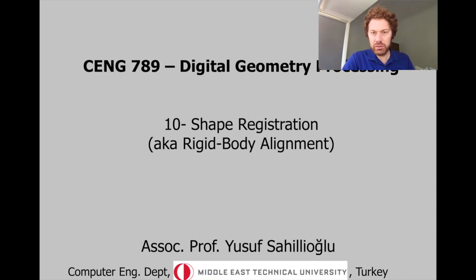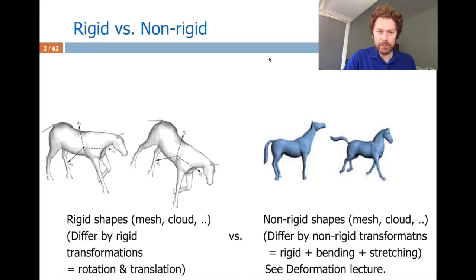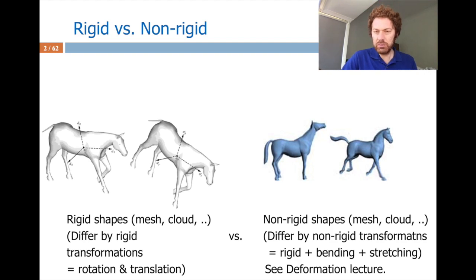It's time to talk about the shape registration problem. In particular, we will deal with the problem on rigid transformations. Rigid shapes are the ones that differ by rigid transformations such as translation and rotation, as we see in this horse case where some translation and rotation difference exists. There is also another shape registration department that deals with non-rigid shapes — it is more challenging and we have dealt with that in detail in the deformation lecture.